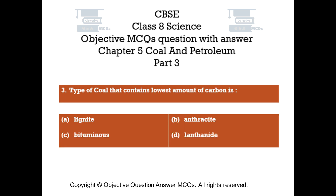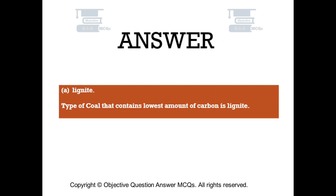Question number 3. Type of coal that contains the lowest amount of carbon is: Option A: Lignite. Option B: Anthracite. Option C: Bituminous. Option D: Lanthanide. The right answer is Option A, Lignite. The type of coal that contains the lowest amount of carbon is lignite.